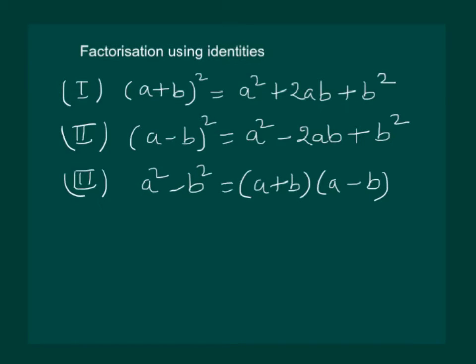And fourth identity is x plus a into x plus b is equal to x square plus a plus b times x plus ab.